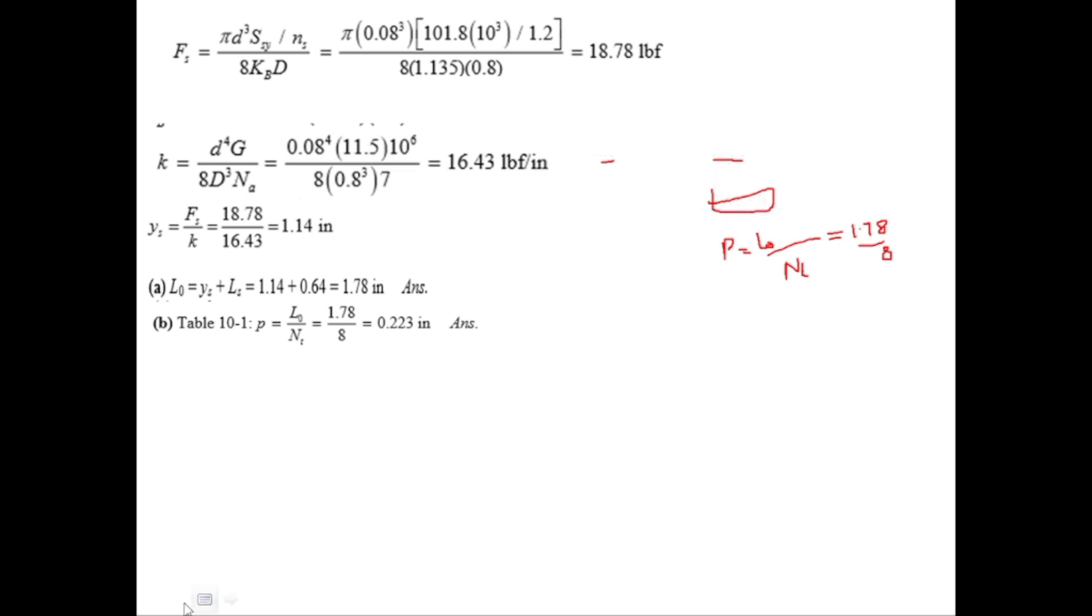In part C we were required to find out solid force FS and we have done that part already. FS is equal to 18.78 lbf. And part D we were required to find out the spring rate K. We have calculated that as well. K is equal to 16.43 lbf per inch.